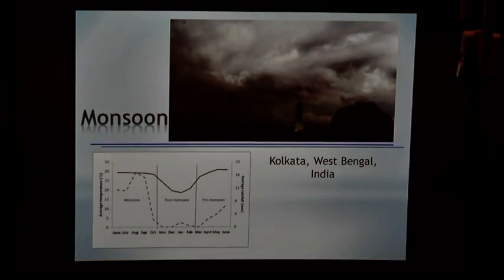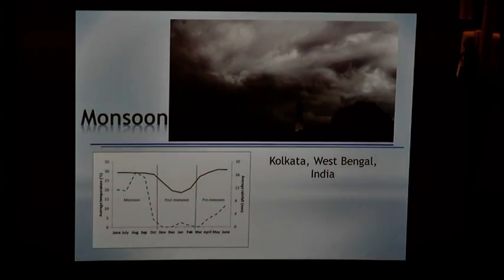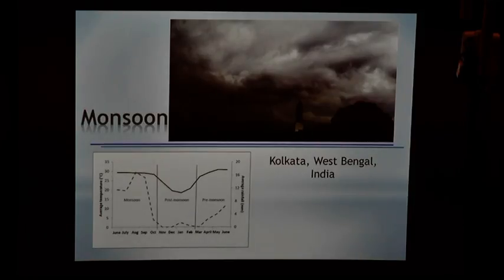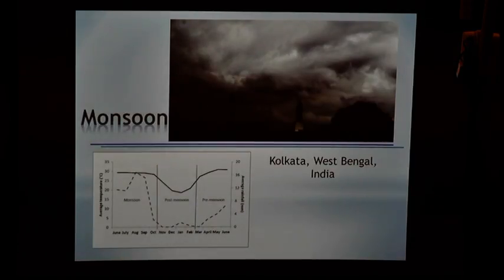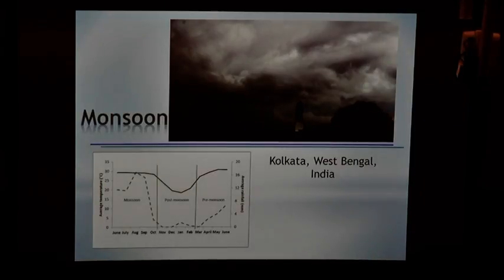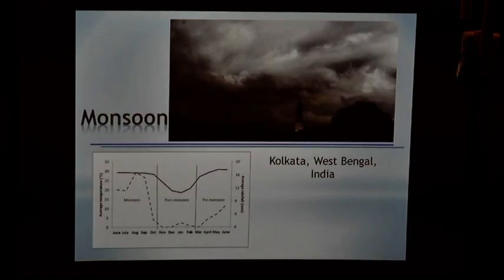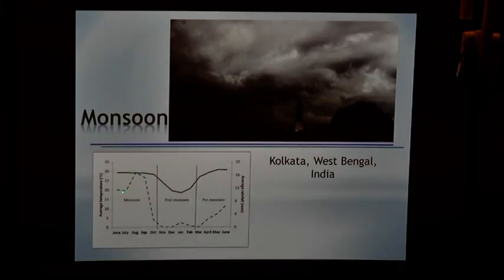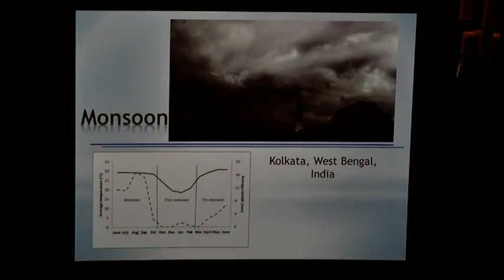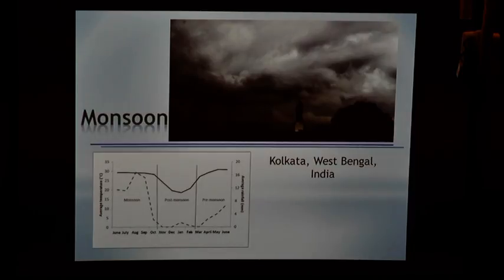One of the things which was totally curiosity-driven is these are subterranean nests — they live under the soil. Have you wondered what happens to these subterranean creatures during the monsoons? The area in which I study this, the average temperature is one line and the average rainfall is another. There's a nice peak from around June and it's more than one centimeter of rain almost every day for a long period of time. So what happens to creatures who live under the ground? That's what we were curious about.